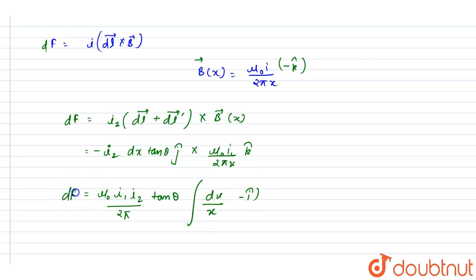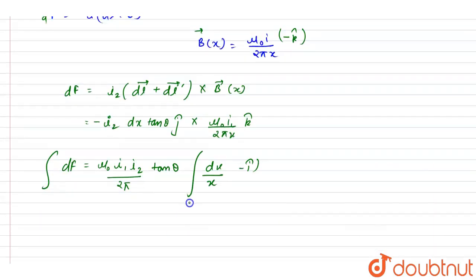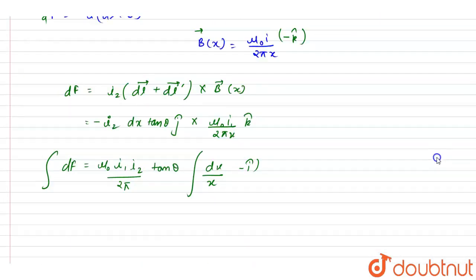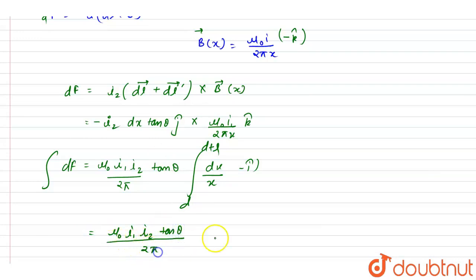Just integrate this — x is varying from d to d plus l. Integrating, we get f2 equals mu naught i1 i2 tan theta divided by 2 pi, times ln of (d plus l) over d, in the minus i cap direction.